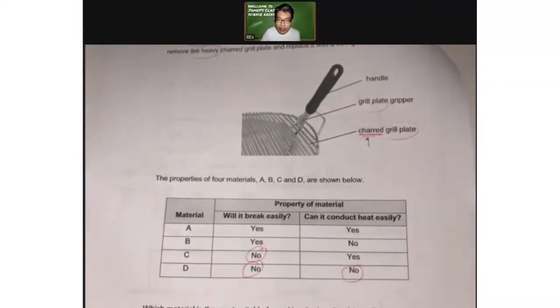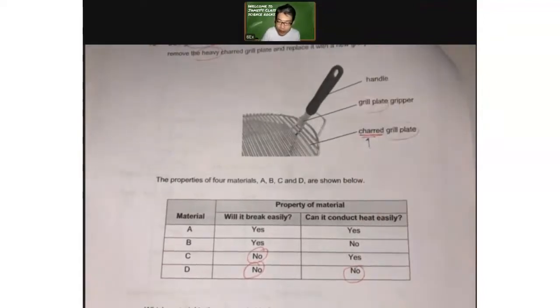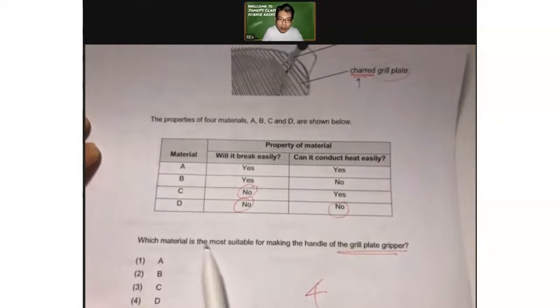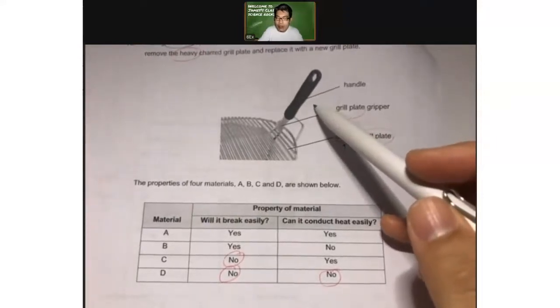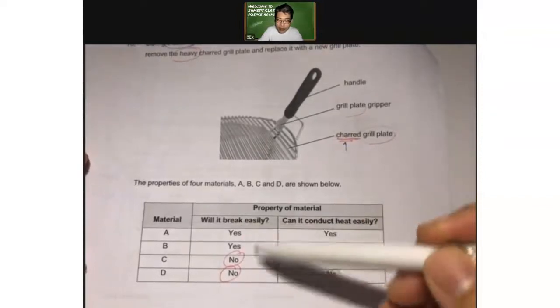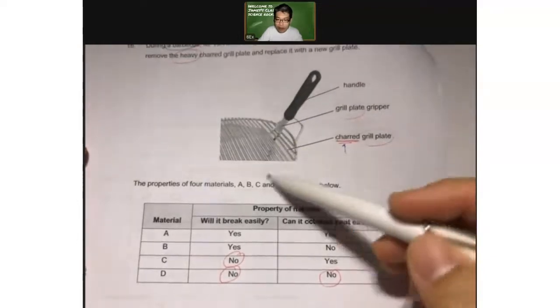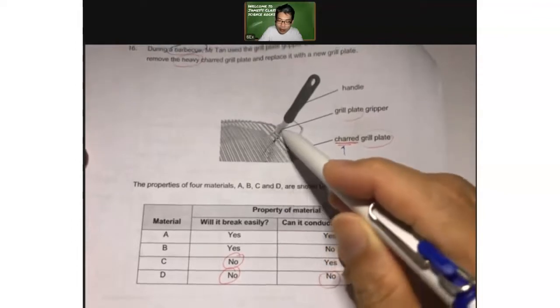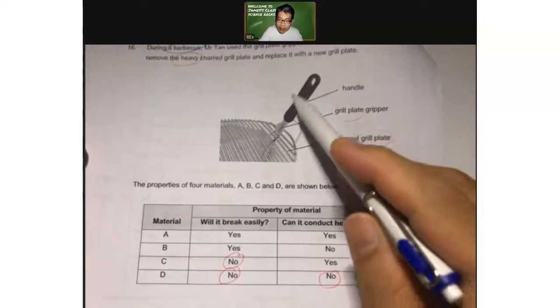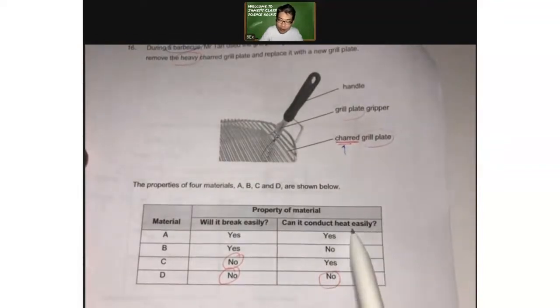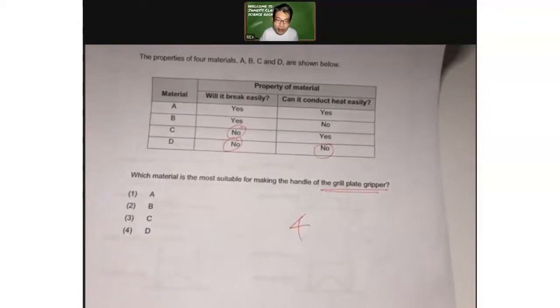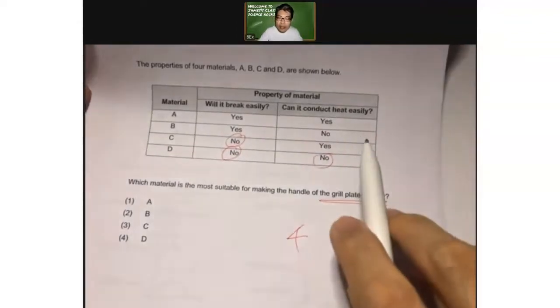So this question is about the property of the material that should be used to make the handle of this. Which material is the most suitable for making the handle? Of course, you don't want a handle that breaks easily, right? You want it to be strong. Strong means it doesn't break easily. So that will be, will it break easily? No. Next is, if this is going to be a hot grill plate, I wouldn't want the heat to be conducted up this grill plate gripper into my hand when I'm holding at the handle. So I want the handle to be a poor conductor of heat. I do not want it to conduct heat easily. It's a no to this question. Therefore the answer is D. The most suitable material is one that doesn't break easily, strong, and one that does not conduct heat easily. It's a poor conductor of heat.